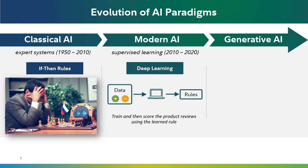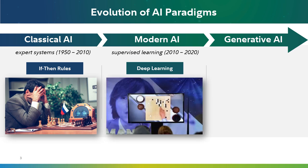Then people said: but wait, why do we have to write the rules? Cannot we show the computer the input data paired with the output labels and let the machine learn these rules on its own? And that's exactly what led to the era of machine learning and deep learning. One example of the shining moment of this type of AI is Google DeepMind's AlphaGo, playing Go against world grandmaster Lee Sedol. The limitation of this type of AI is that this supervised approach can run into issues because it depends on truth labels that we need to provide.